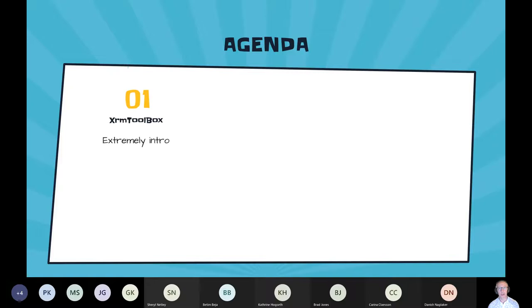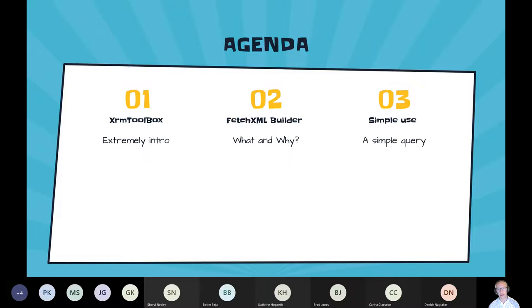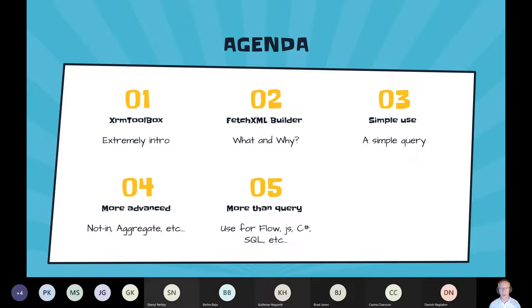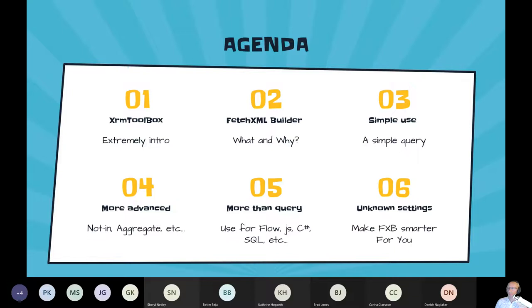So what's my agenda? It's very simple. We start with an extremely short intro to XRM Toolbox, because I think you've all heard of it. Then we start with FetchXML Builder — what is that, and why do we need it? Then we actually use it: start with a simple query and make it more advanced with link entities and outer joins, which are not possible from the UI. Then we look at what more we can do with the queries — use them in Flow, JavaScript, C#, SQL, and more. And then we look at the settings of FetchXML Builder.